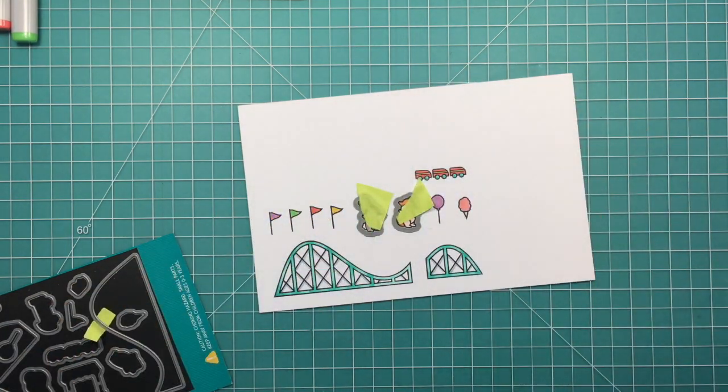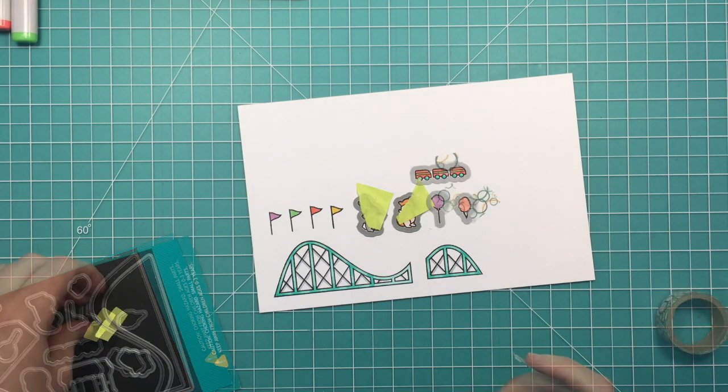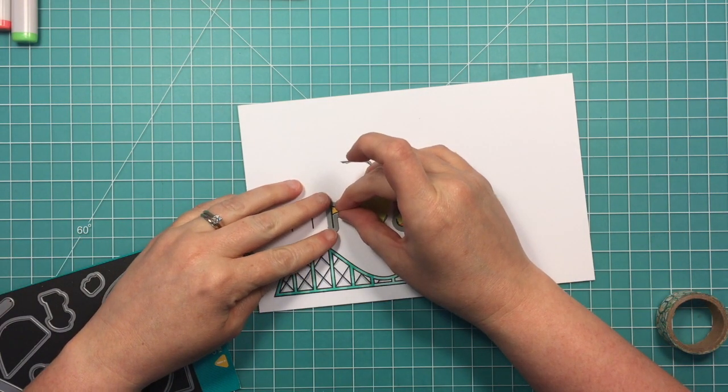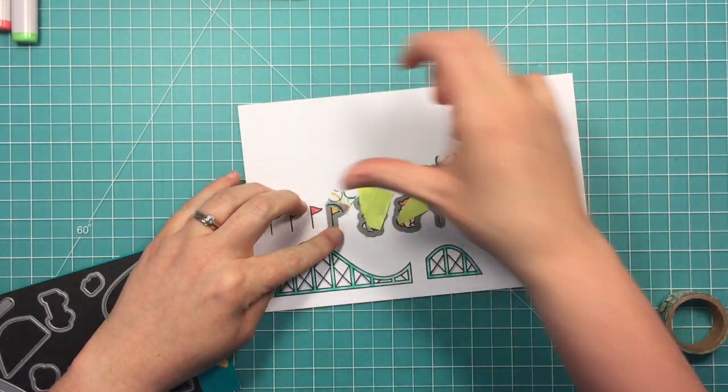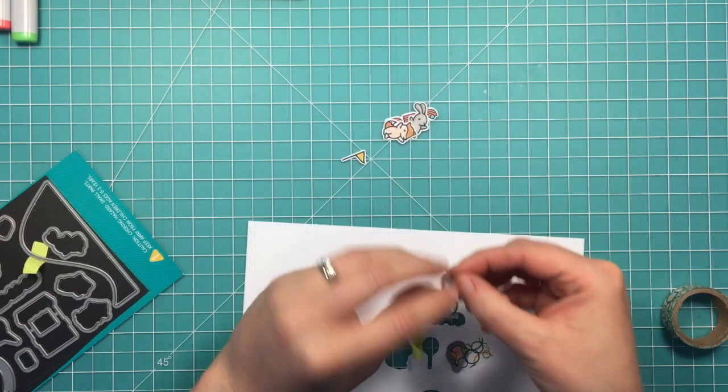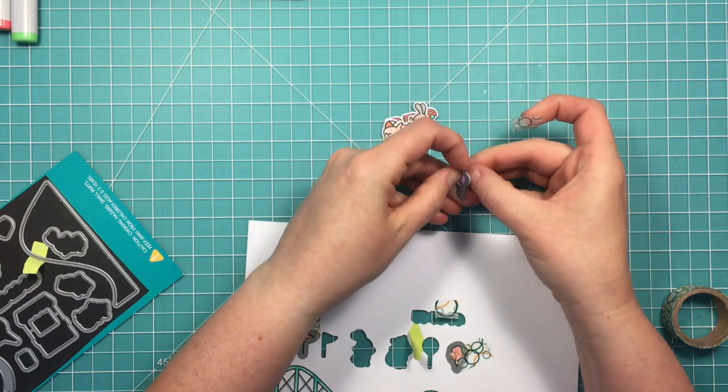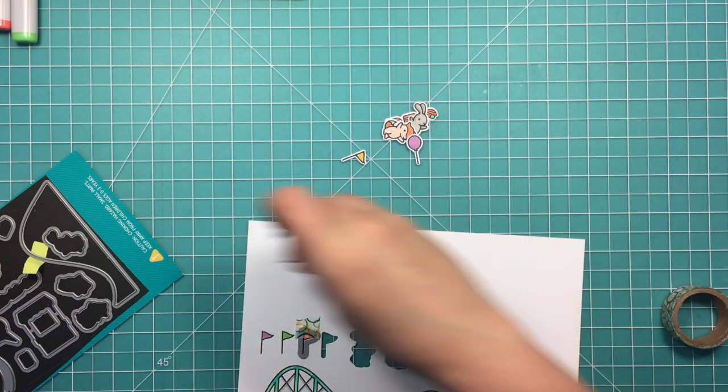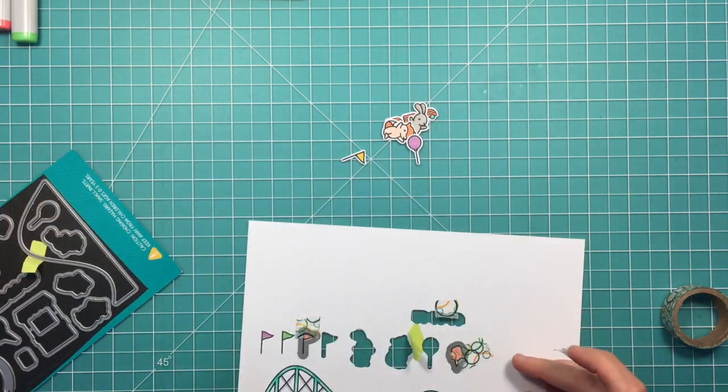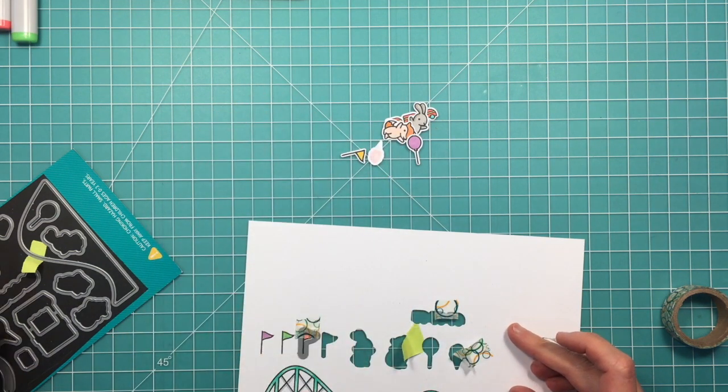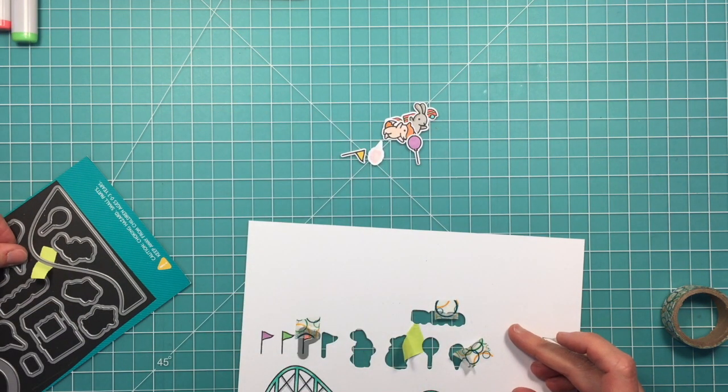I've got the coordinating dies and I'm just going to line all those pieces up and hold them down with some low tack tape. You'll see that I am not going to use the dies for the roller coaster and I will show you why here in a minute. But I'm going to go ahead and cut out all the little small pieces using the dies. This makes cutting out these really small pieces really simple.